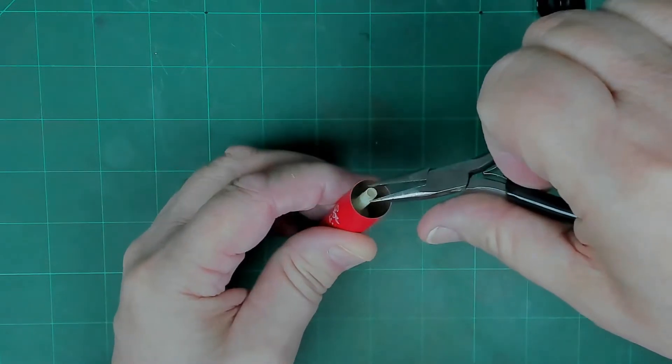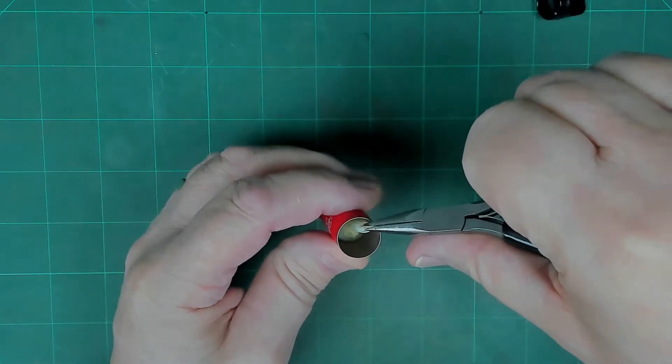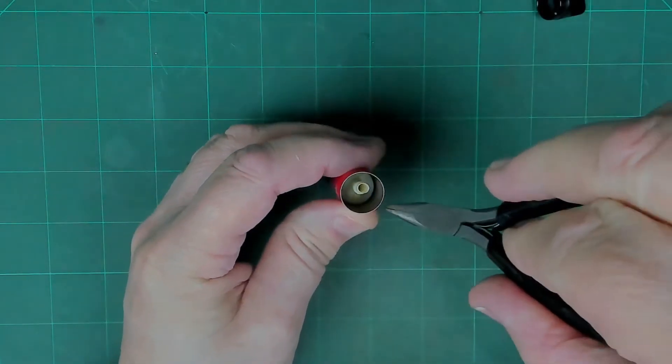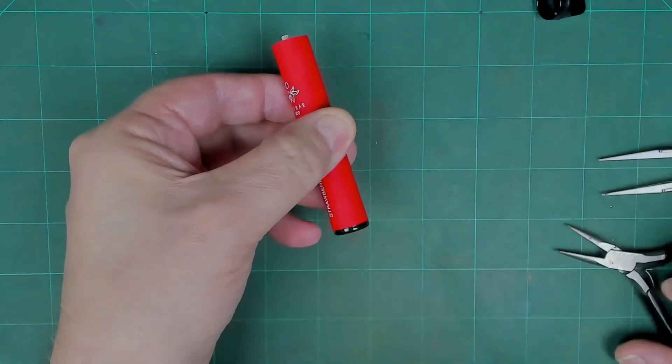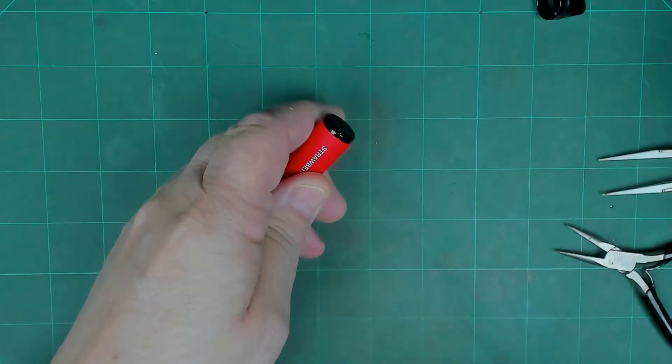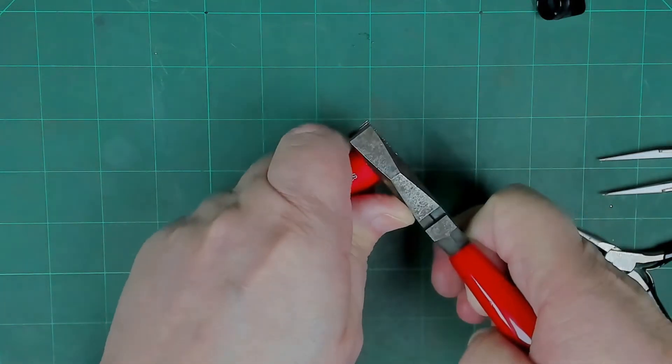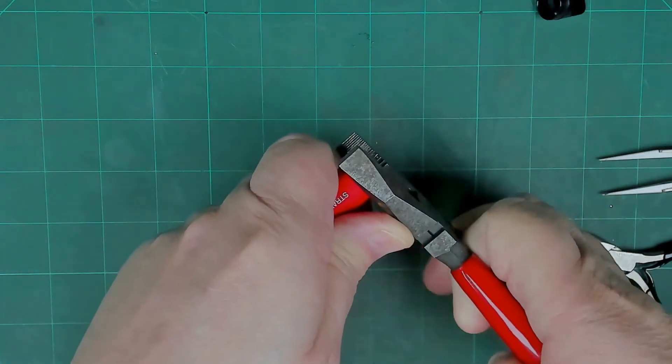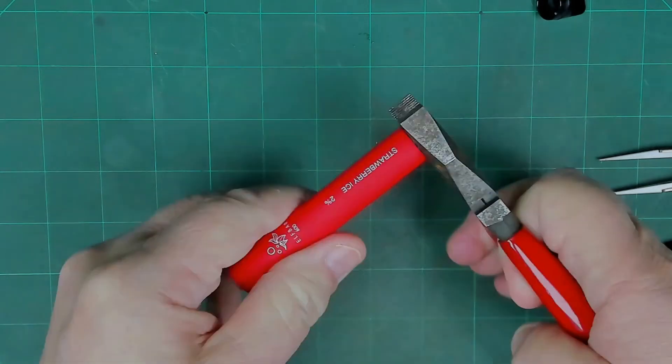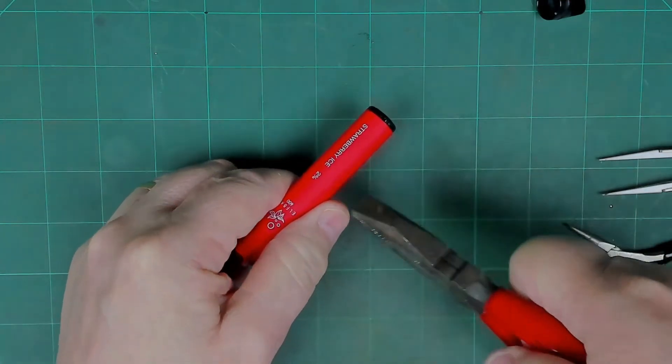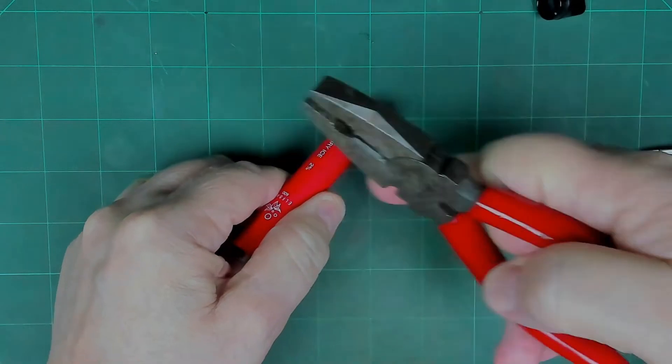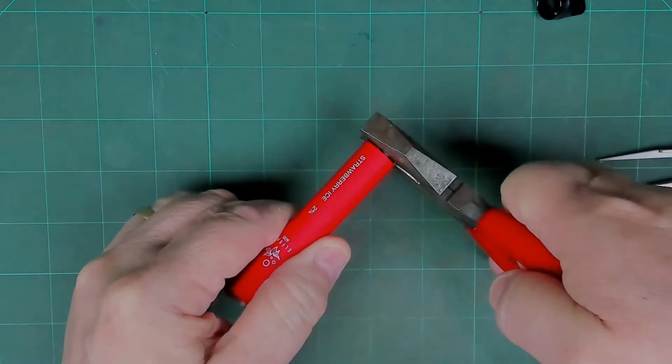That's the heating element in there, and down there is the battery. To get the battery out, we have to take this end off. So again, we just grip it with a nice pair of pliers and twist it.